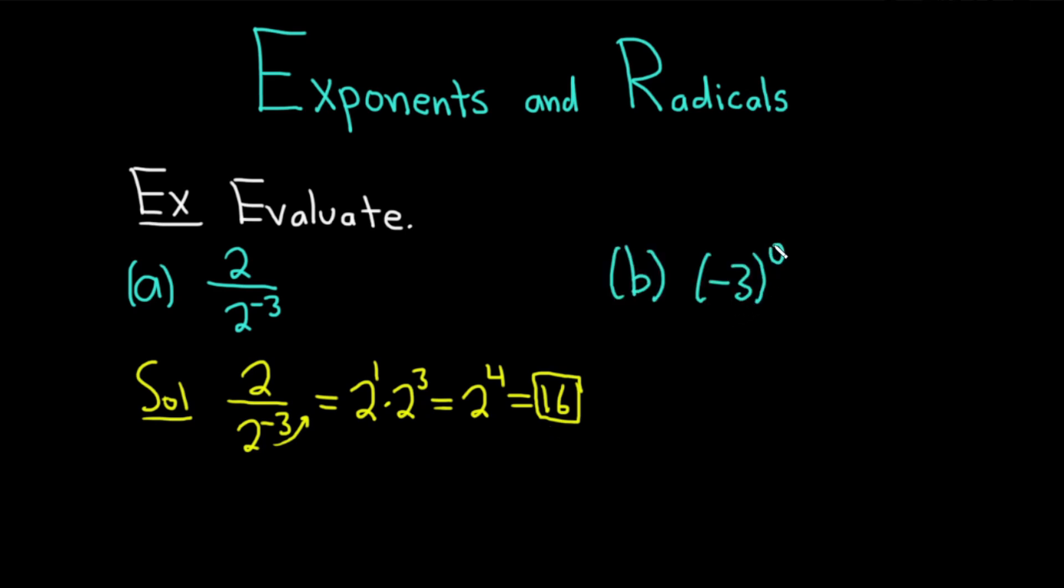Part b, we have negative 3 to the 0 power. And this one's actually really easy once you know how to do it. Solution. Whenever you have a number to the 0 power, it's just going to be equal to 1. So the answer is just 1. And it's really that easy. So if you have something to the 0 power, you're going to get 1. Let's do some more examples,